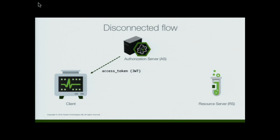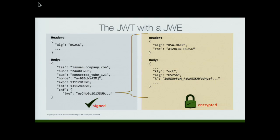And once again, it produces some sort of key — or has the AS produce some sort of key — and puts that in the request. But we have a disconnected device. So the access token that gets returned this time is not a reference string — it's another type of token called a JWT. And a JWT is a by-value token, meaning it contains the data. The previous example was a string that referenced some data in the OAuth server's database. This time the OAuth server sends everything back.